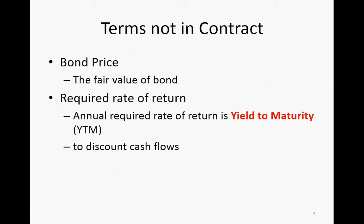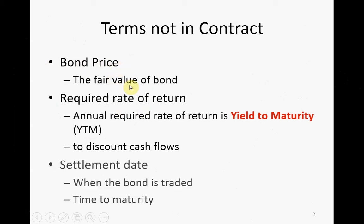You don't know what the return per year the bond will give you — these are two terms that determine each other. You also don't have a settlement date in the contract. The settlement date is when the bond is traded, and based on the settlement date you can calculate the time to maturity.